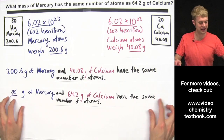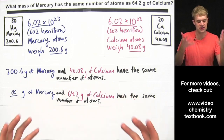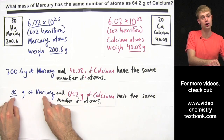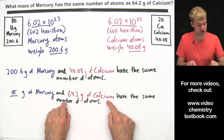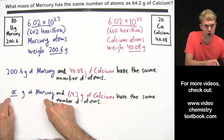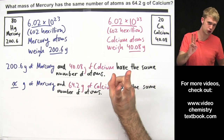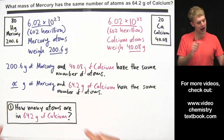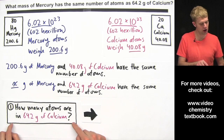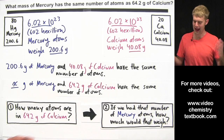The question is really asking: x grams of mercury and 64.2 grams of calcium have the same number of atoms — what is x? In other words, what amount of mercury has the same number of atoms as 64.2 grams of calcium? We're going to solve this in two steps: first, find how many atoms are in 64.2 grams of calcium; then, find how much mercury that many atoms would weigh.